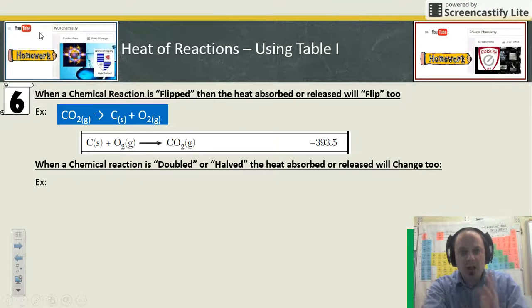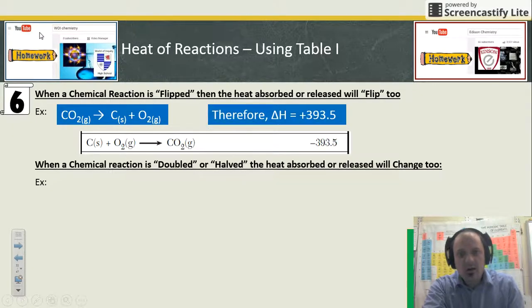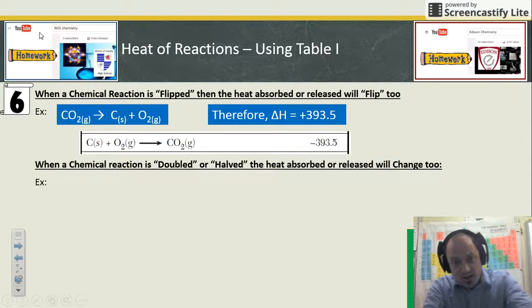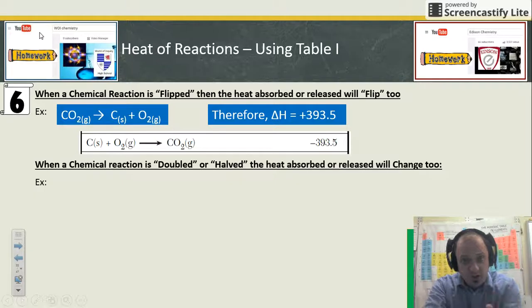This reaction on the table, carbon solid plus oxygen gas makes CO₂ gas. Pardon me, I misspoke there. The example I gave you has been flipped, so the delta H sign needs to be flipped too. Remember that if your reaction is reversed, the sign on your delta H is reversed as well.